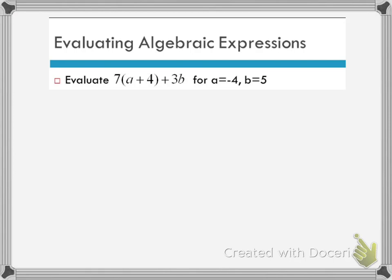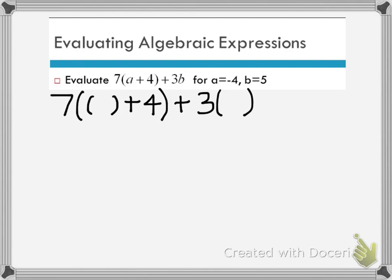Let's take a look at another example. I want to evaluate the expression 7 times the quantity a plus 4, plus 3b, with a equals negative 4 and b equals 5. I'm going to start with my skeleton — I remove the variables and replace them with empty sets of parentheses. I start with the 7. The expression already has parentheses, so I open a set for those, then inside I put a nested empty parenthesis for the variable a, then plus 4, and close that original parenthesis. Then I have plus 3 times another empty parenthesis for b. I replace a with negative 4 and b with 5, so now all I have is a numerical expression with no more variables.